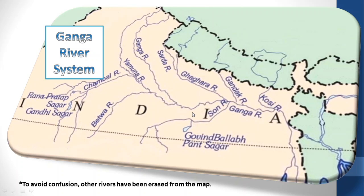Then the Ganga reaches Farakka in the east direction. After that, the Ganga bifurcates — one branch goes to West Bengal, known as the Bhagirathi-Hooghly, and the main stream goes to Bangladesh. Here it is joined by the Brahmaputra. Together it is called Meghna, and then it forms the world's largest delta, known as the Sundarban delta, before falling into the Bay of Bengal.